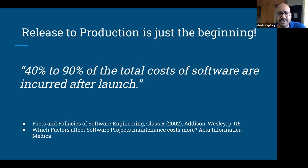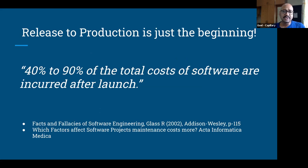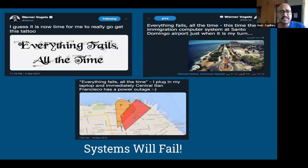Release to production is just the beginning of the lifecycle of any software system. There have been many studies, and from anecdotal evidence as well, 40 to 90% of the total cost of software is actually incurred after launch — the maintenance, keeping uptime and performance healthy, pushing in bug fixes, patching. It's a significant amount of cost that goes beyond just the first release. As systems are becoming more and more complex and distributed, and as a famous VC rightly said, software is eating the world — software is patching more and more parts of our lives.